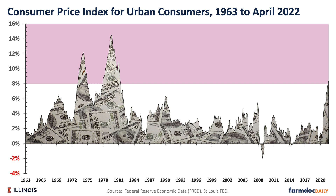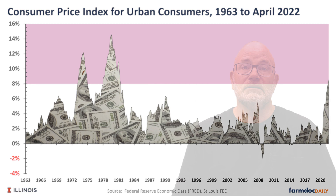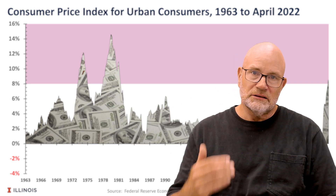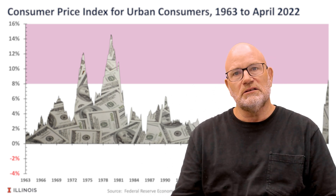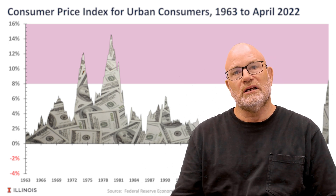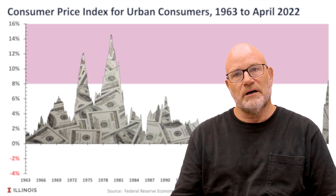We had a large and long inflationary period from roughly 1973 through 1981. This is the first time that we've seen inflation above the 8% range since the beginning of the 1980s. We asked ourselves: is there a relationship between inflation and commodity prices?